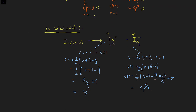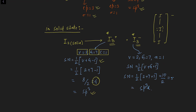For I3+: monovalent atoms = 2 (iodines are monovalent), valence electrons of iodine = 7, cation charge = 1. Putting values into the formula gives steric number 4, so hybridization is sp3. For I3−: monovalent atoms = 2, valence electrons of iodine = 7, anion charge = 1. Steric number = 5, so hybridization of iodine in I3− is sp3d.